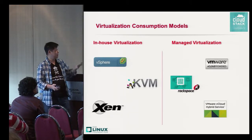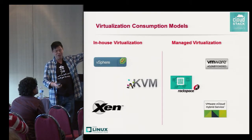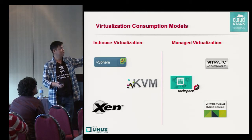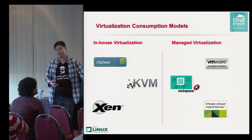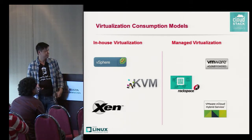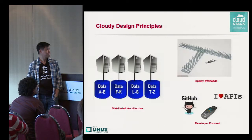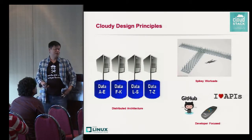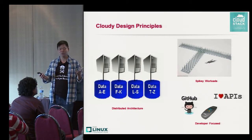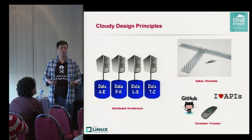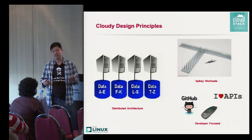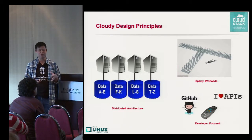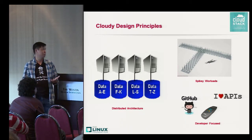There are various consumption models — different hypervisors that support virtualization — and you can also outsource virtualization to various companies that do managed virtualization hosting. But around 2007, Amazon released AWS, and that was a completely new way of looking at how infrastructure should be rolled out and how applications should be designed.